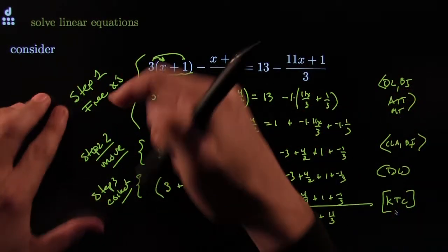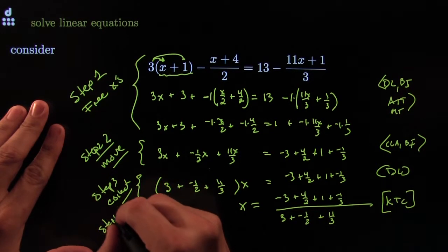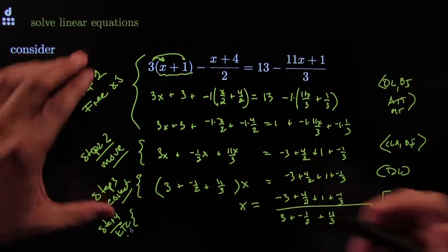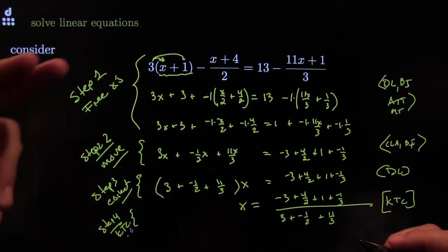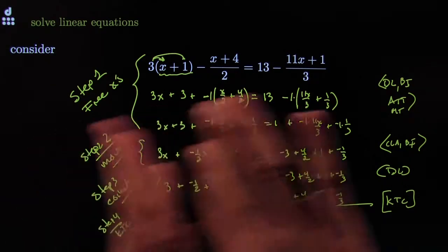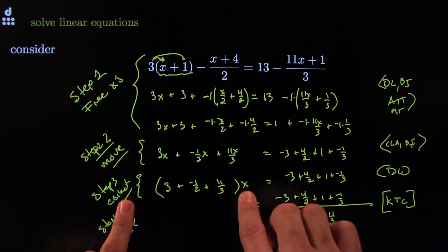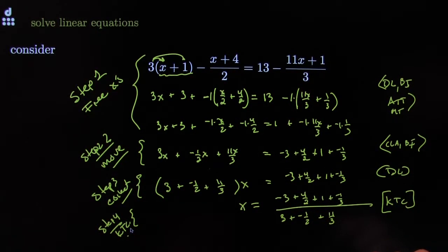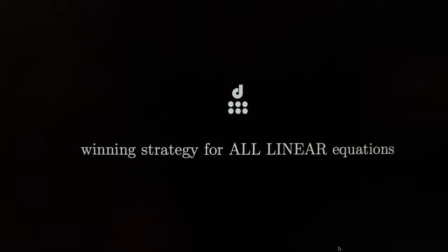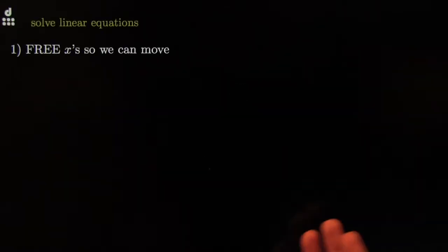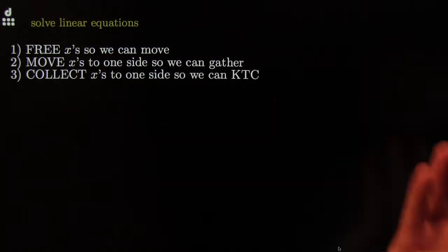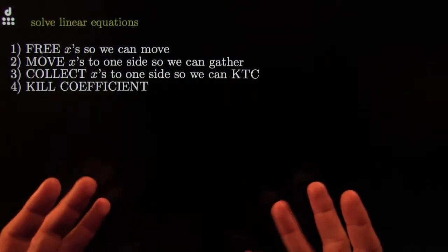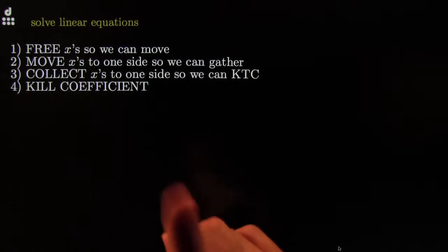This procedure — this strategy — is the winning strategy for all linear equations in the universe. Free the X's, move them all to one side, move the non-X things to the other side, gather your X's using the distributive law, and kill the coefficient. It'll always, always, always work. It's your turn to try a few of these. We'll see you next time. Free them so you can move them, move them so you can gather them, gather them so you can kill the coefficient — the winning strategy for all linear equations.